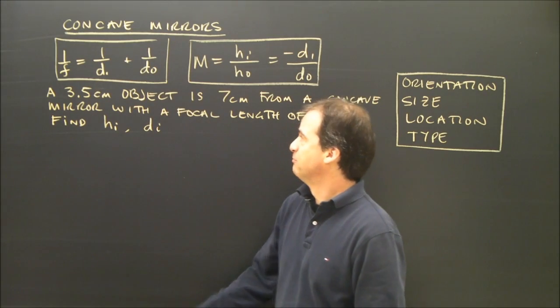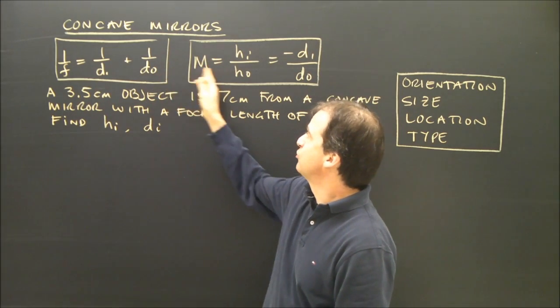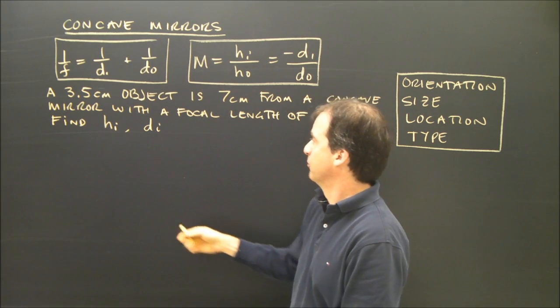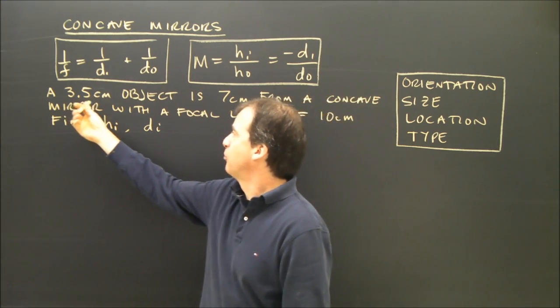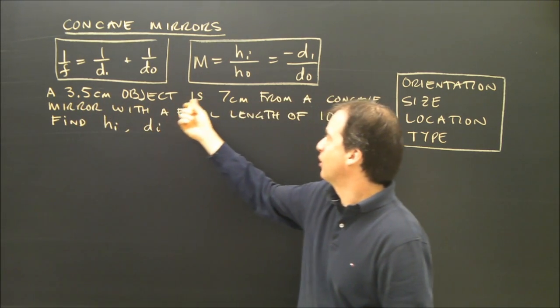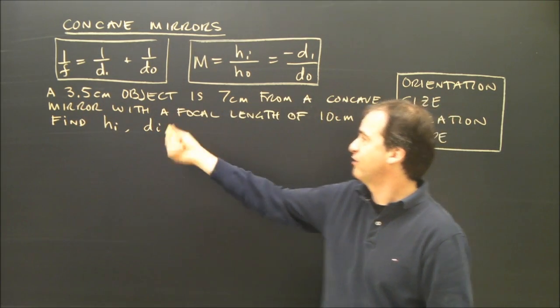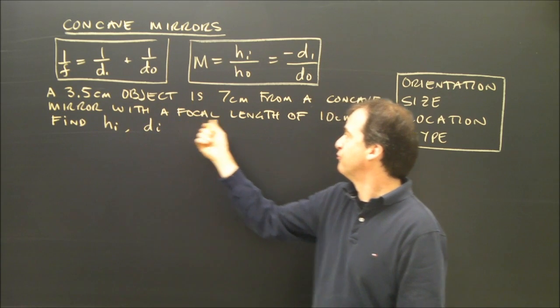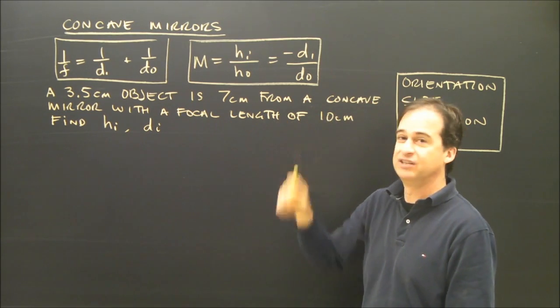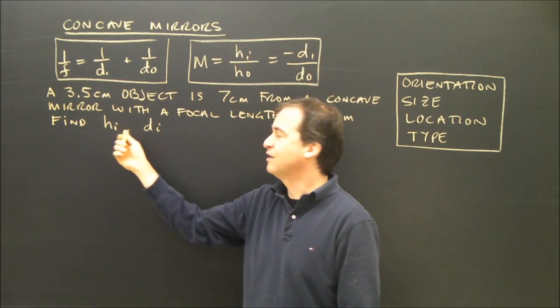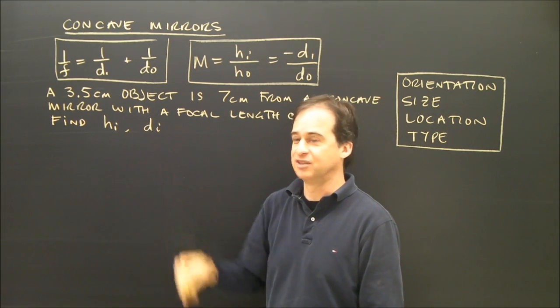Here's a sample problem. I'm going to use these two formulas for a concave mirror. A 3.5 cm object is 7 cm from a concave mirror with a focal length of 10 cm. Find the height of the image and the distance to the image.